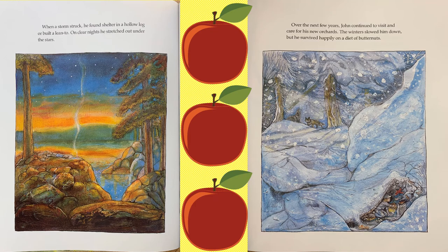When a storm struck, he found shelter in a hollow log or built a lean-to. On clear nights, he stretched out under the stars. Over the next few years, John continued to visit and care for his new orchards. The winter slowed him down, but he survived happily on a diet of butternuts.